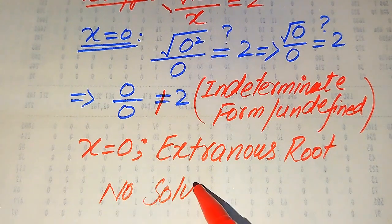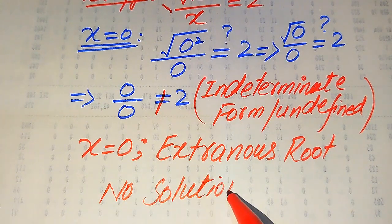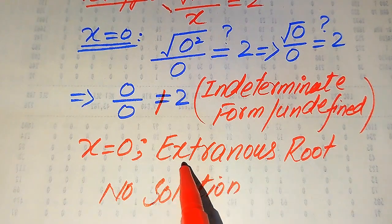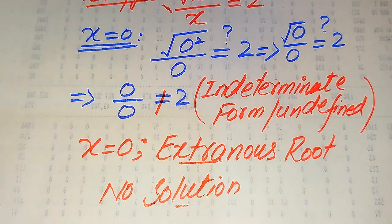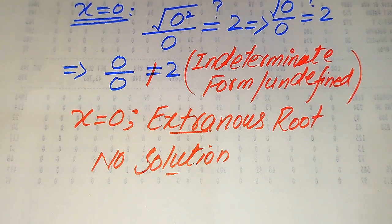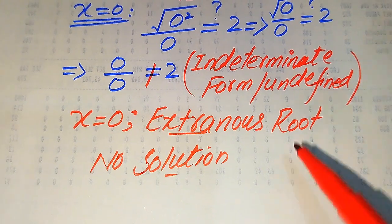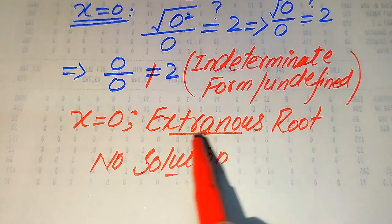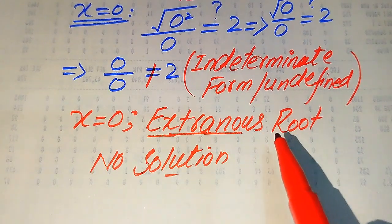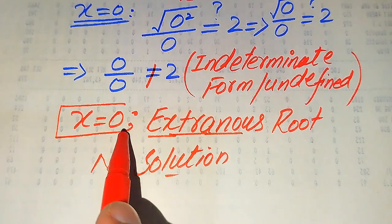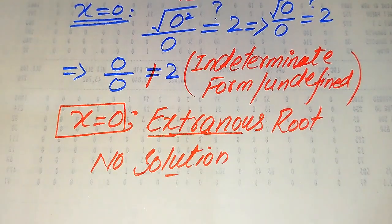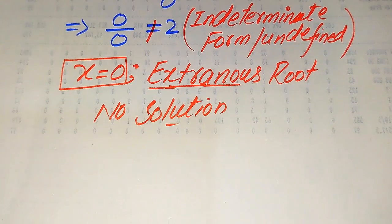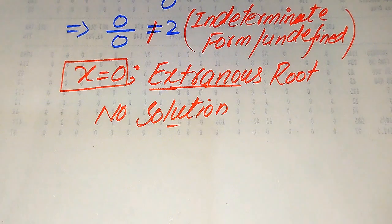The roots which satisfy our given equation are called solutions. Unfortunately this question has no solution. The roots which do not satisfy our given equation are called extraneous roots. As you can see, x equals 0 is an extraneous root because it does not satisfy our given equation. This is the final conclusion about the solution of this problem.